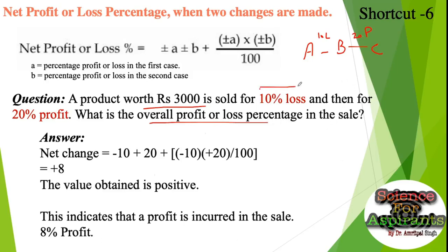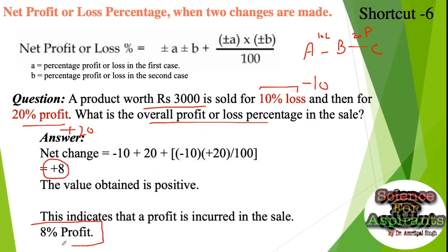Another example with sequential transactions: a product is first sold at 10% loss, then at 20% profit. Solving with the formula, the result comes out to plus 8, meaning there is an 8% profit overall in the sale.